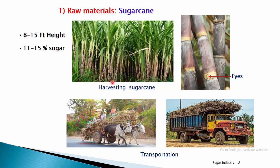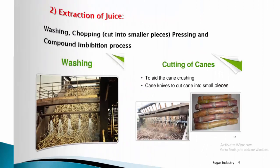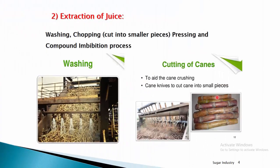Once the sugar cane is harvested at 8 to 15 feet height, consisting of 11 to 15 percent sugar, it is cut and transported to the sugar industry. Transportation can be done by trucks and other vehicles. It is important to send the cut cane immediately to the sugar industry with no delay, because delay can cause weight loss.